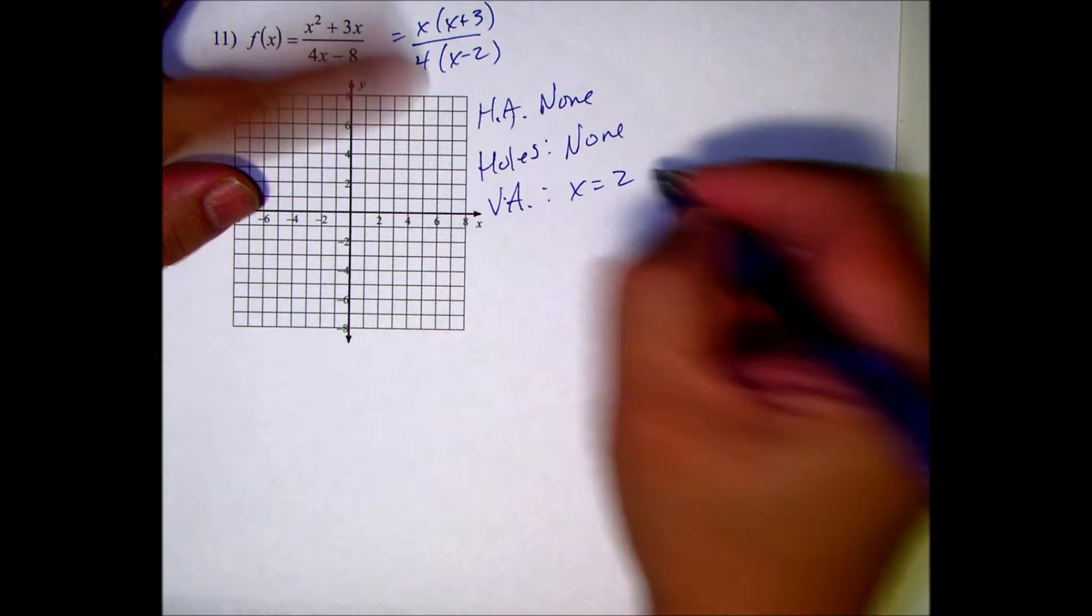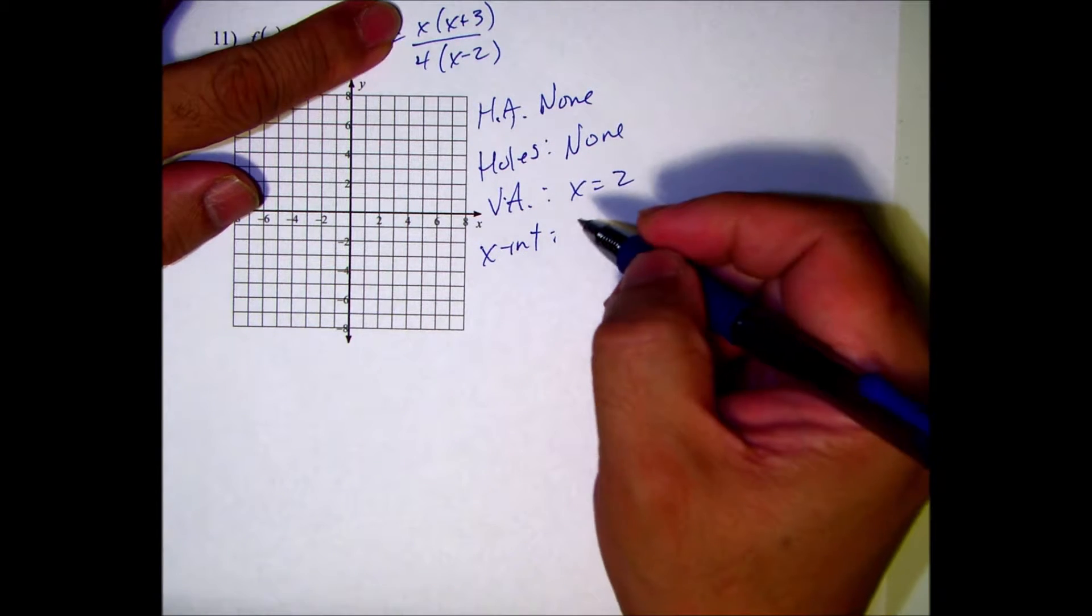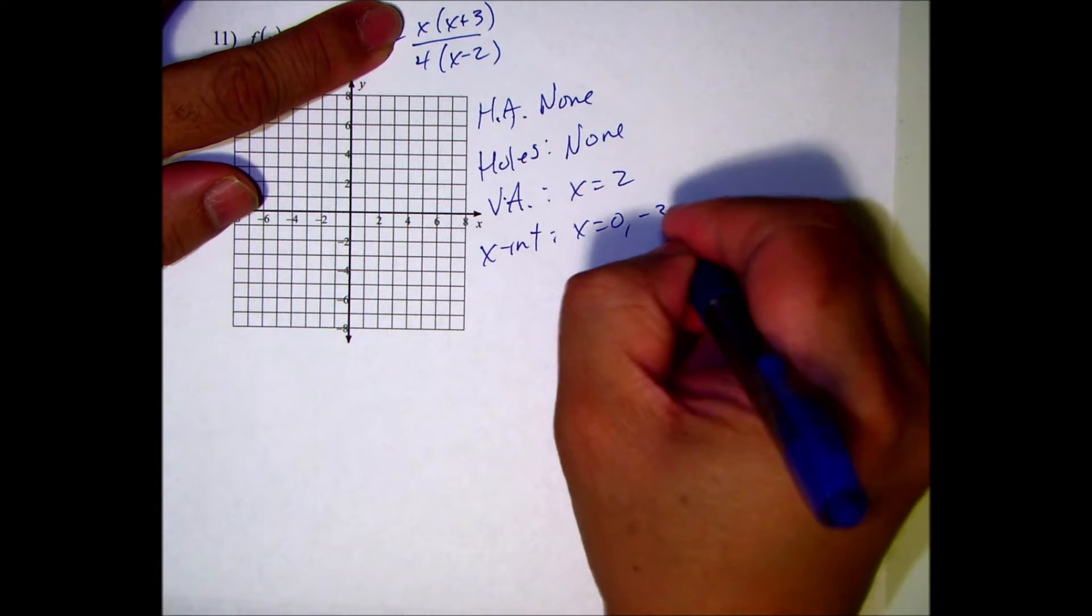So x equals 2. Look for the x-intercepts. That makes the numerator equal to zero, so that's x equals 0 and negative 3.